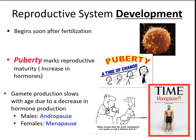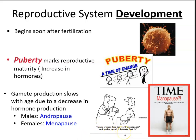Gamete production slows with age due to a decrease in hormone production. In males, this period is known as andropause — a decrease in testosterone production. In females, it is called menopause, which is when estrogen production decreases. According to this doctor, many women fear the word menopause, so she prefers to call it 'puberty part two.' In males, instead of andropause, some call it 'male menopause.'